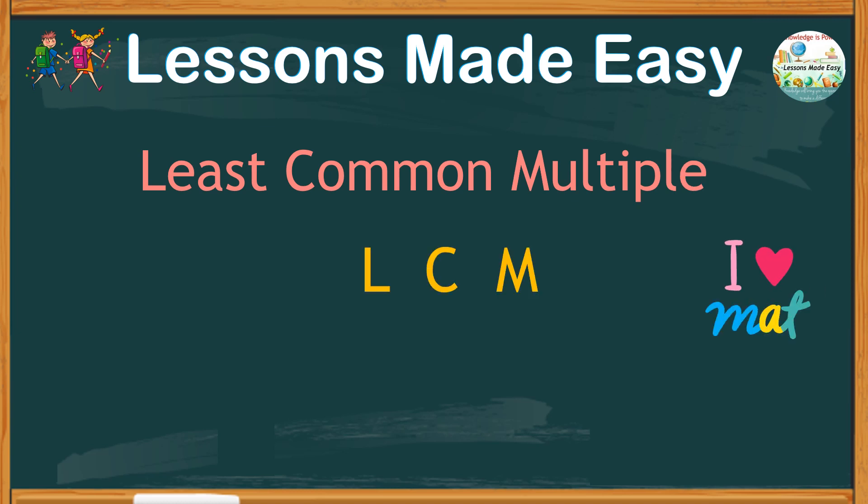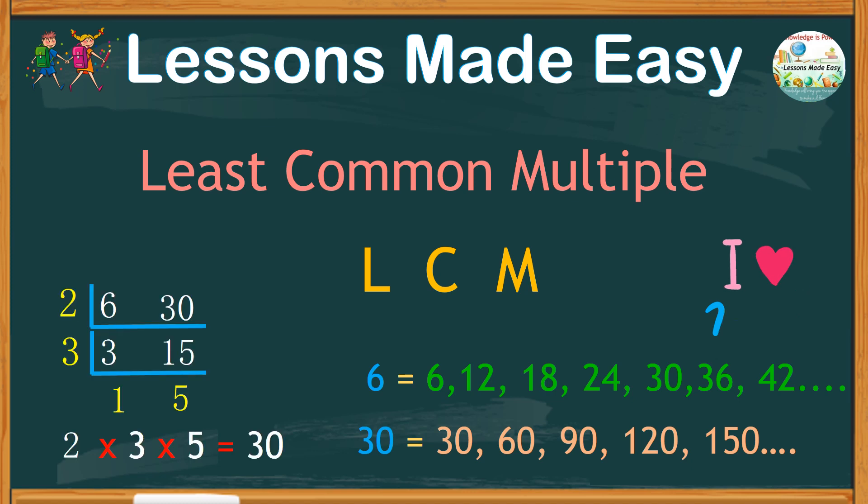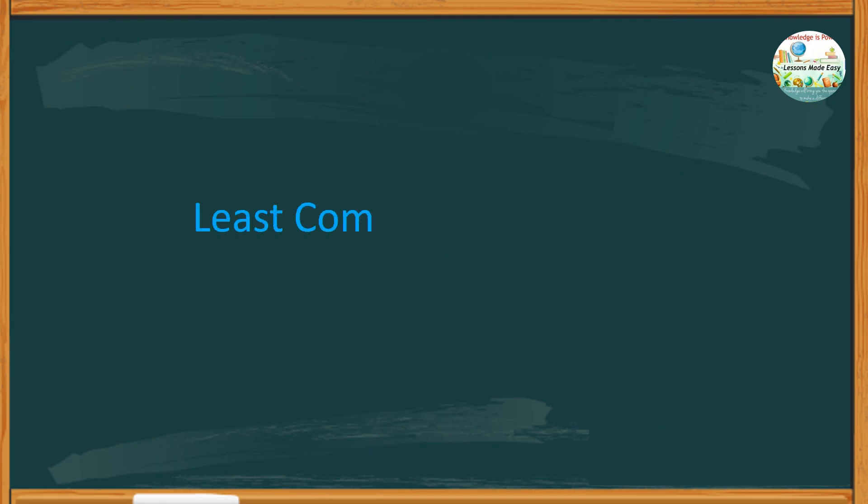We can find the least common multiple of two or more numbers by listing or doing repeated addition, or also using the long division. So, stay with me, and let's get started. Suppose we are looking for the least common multiple of four and six.